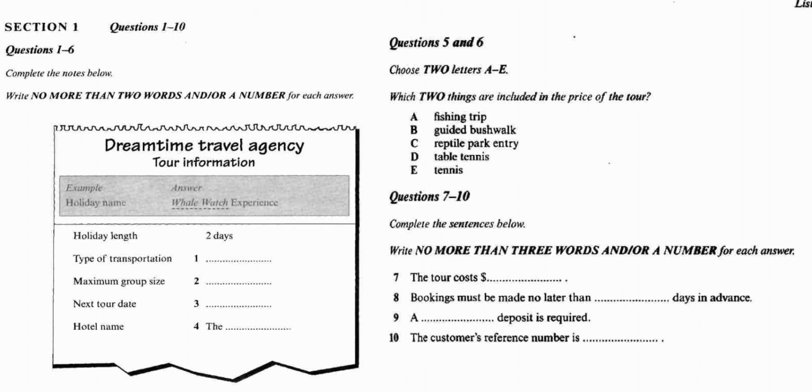That is the end of Section 1. You now have half a minute to check your answers. Now turn to Section 2. Section 2. You will hear a radio programme giving parents advice about buying cots for their babies to sleep in. First, you have some time to look at questions 11 to 17. Now listen carefully and answer questions 11 to 17.